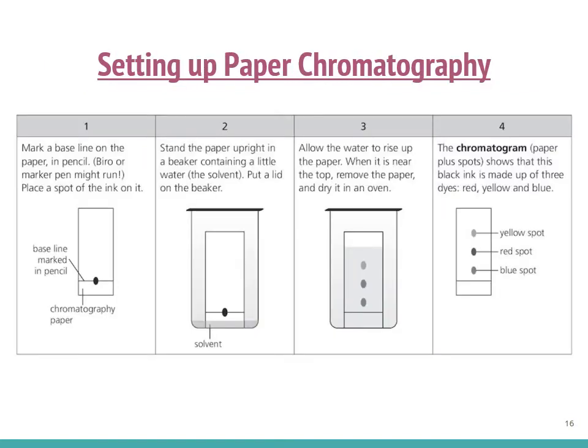How do you set up paper chromatography? First, draw the baseline 0.5 cm from the bottom of the paper and the solvent front 0.5 cm from the top, then place a spot of ink on the baseline. Second, make the paper stand upright in a beaker containing a little water as the solvent, put a lid on the beaker, and ensure the solvent level is lower than the baseline. Third, allow the water to rise up the paper, and when it is near the solvent front, remove the paper and dry it in an oven.